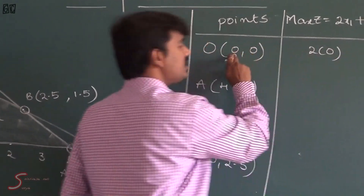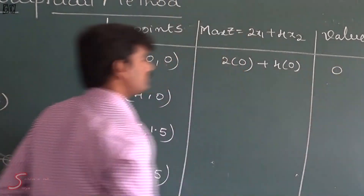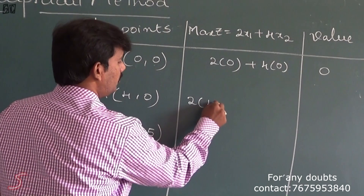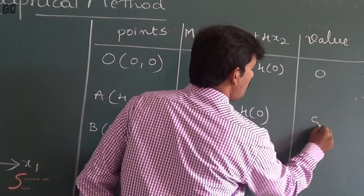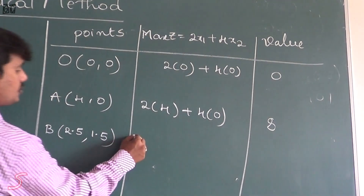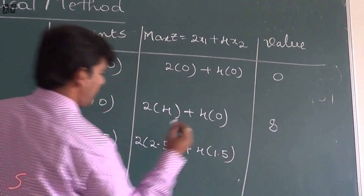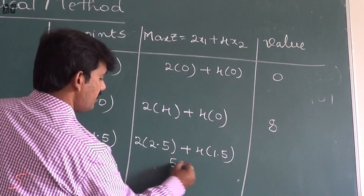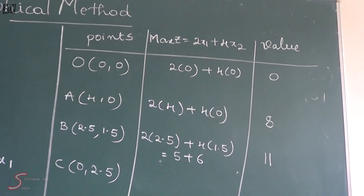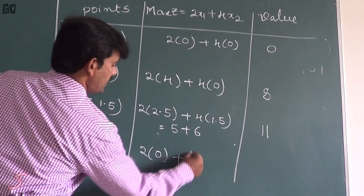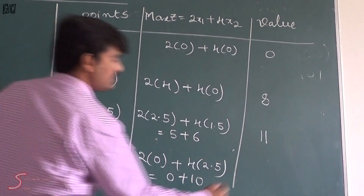At the origin x1=0, x2=0: Z = 2(0) + 4(0) = 0. At point A, x1=4, x2=0: Z = 2(4) + 4(0) = 8 + 0 = 8. At point B, x1=2.5, x2=1.5: Z = 2(2.5) + 4(1.5) = 5 + 6 = 11. At point C, x1=0, x2=2.5: Z = 2(0) + 4(2.5) = 0 + 10 = 10.